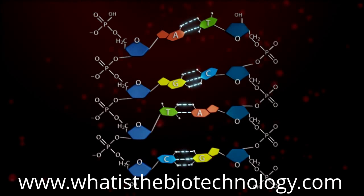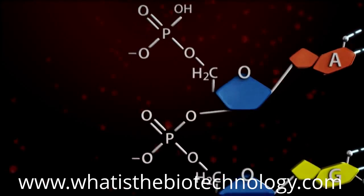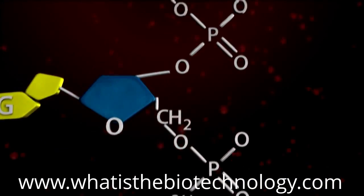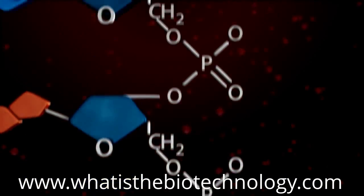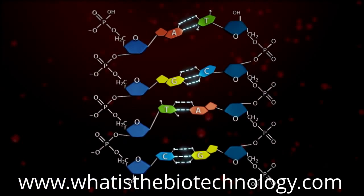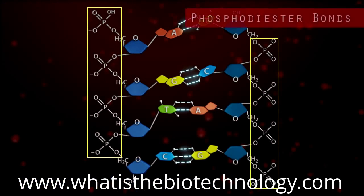Look closely and you'll see how the phosphate group on one nucleotide has formed a bond with the OH group on the nucleotide above it. This is called a phosphodiester bond, and these bonds are highlighted in yellow. The alternating string of sugar and phosphate bonds form the backbone of the DNA strand.